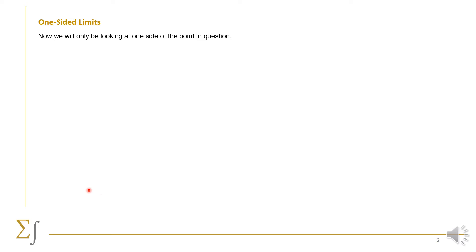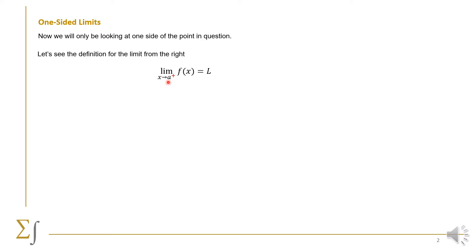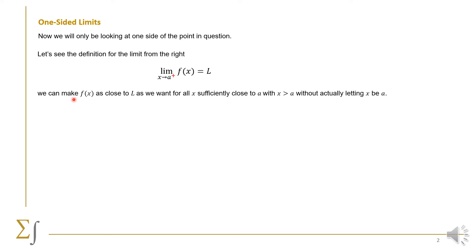We start with one-sided limits. We are talking about one side of the point in question. If we're talking about x equals a, we take one side of a, either from the right or from the left. The limit of f(x) as x approaches a from the right — denoted with a plus sign — is equal to L. So we make f(x) close to L as much as we wish for all x sufficiently close to a where x is greater than a, without having x be a itself.